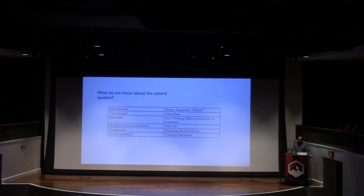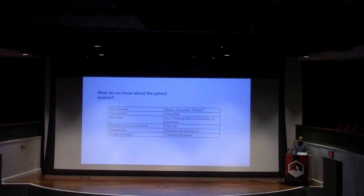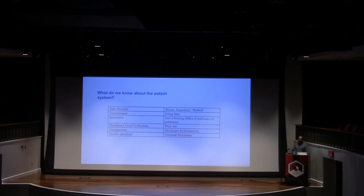Well, we know about the patent system too. Data structure. Blocks issued sequentially. Once your patent is examined and assessed by the government, it's timestamped — you get your filing date. It's immutable, issued from the government printing office. If you need to correct it, you get a certificate of correction printed from the office; you don't change the original document. It's distributed trust and verification — you're claiming this is new and not obvious, and that claim is verified against a peer system of other patents. Transparency through disclosure for exclusivity. And it solves the double-spending problem because you cannot have double-patenting — there are terminal disclaimers to prevent that.